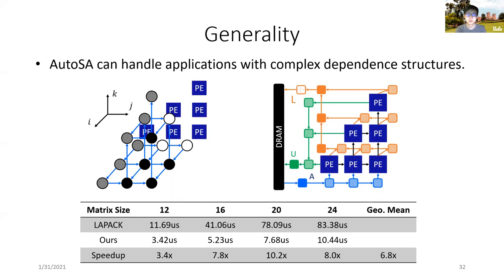We assess our framework in three dimensions. First, for generality, we show that AutoSA can handle applications with complex dependence structures. We use the LU decomposition as an example. The figure on the left shows the dependence structure of this application. Each node represents one loop instance, while the edges between them represent data dependencies. The iteration domain of this program is in a pyramid shape with different types of computation inside each node.